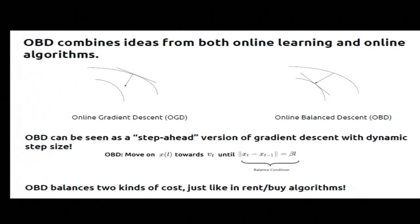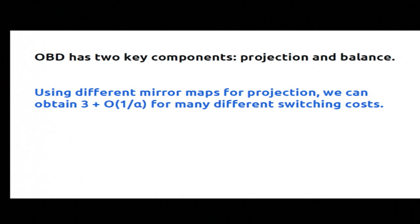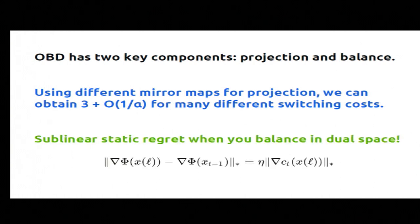In my last minute, let me just say that I made it sound as if OBD is a specific algorithm for a specific problem. But really, this is a much more general framework. OBD has two different components, projection and balance. If I play with the projection part, I can actually get similar results for different kinds of switching costs. So instead of being L2, I can get L1 or things like that in some cases. And if I play with the balance, I can get different kinds of performance guarantees. So if I want to get no regret, I can do that. I just change the balance condition. So really, this is a much more general framework. It's a way of designing algorithms that hopefully will lead to new performance guarantees for new kinds of problems. With that, I'm happy to take questions.